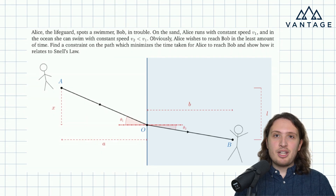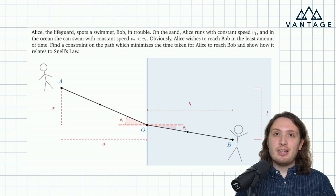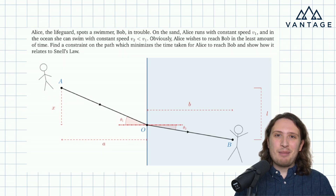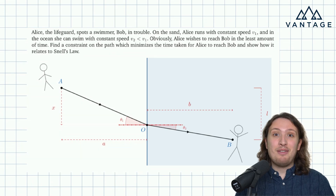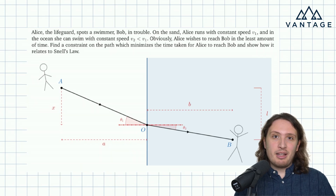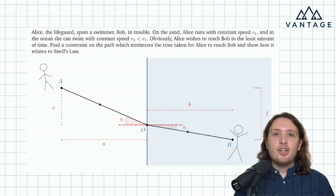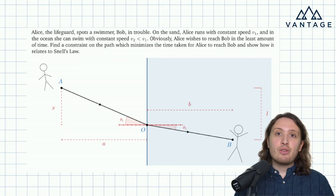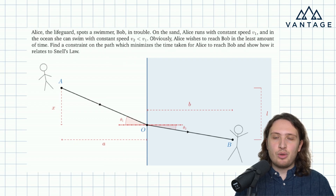We're given here a situation which is analogous to the passage of a ray of light. We're thinking about a lifeguard trying to run to save a flailing swimmer. Alice the lifeguard spots Bob, a swimmer, who is struggling in the water. She can run on the sand with a speed V1, and she can swim in the water with a slower speed of V2.